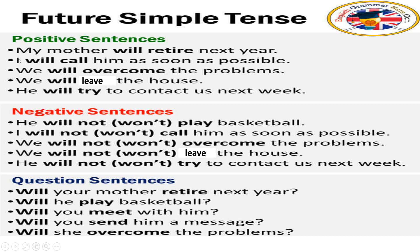Next example: 'I will call him as soon as possible.' Negative: 'I will not call him as soon as possible.' Interrogative: 'Will I call him as soon as possible?' Another example: 'We will overcome the problem.' Negative: 'We will not overcome the problem.' Interrogative: 'Will we overcome the problem?'